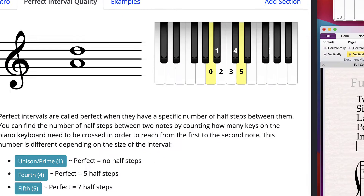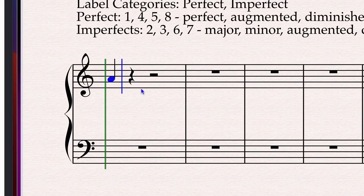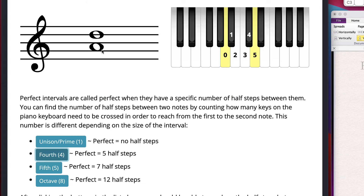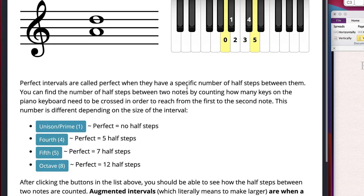To get a perfect fourth — which has kind of an open sound — figure out the size first: 1, 2, 3, 4. It's a fourth. In order to have a perfect fourth, you need five half-steps — five half-step moves to get from one to the other. Starting on A, move once to that black key: 1, 2, 3, 4, 5. Five half-steps makes a fourth perfect.